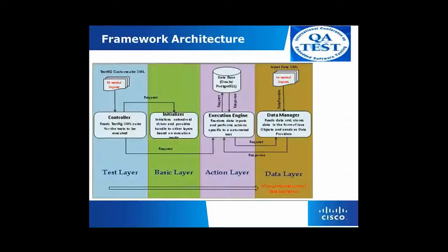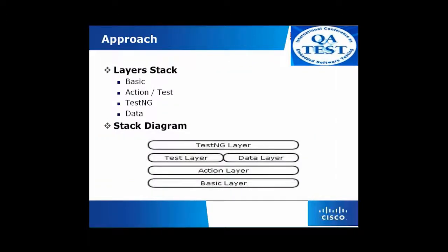Moving on to the architecture. We have four layers: the test layer, basic layer, action layer, and the data layer. We have the action layer stack, action and test layer stack, TestNG stack, and the data stack. The TestNG layer has a list of tests and multiple combinations of data we want to provide to the test layer. The test layer has all functional tests we want to do on any Android application. This gets feed from a data layer which has combinations of data to pass to each functional test. This speaks to the action layer which gives all possible actions on a single page activity or any Android app.